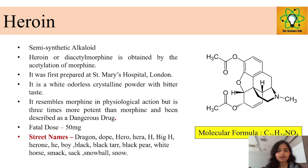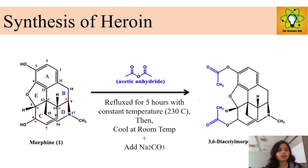Here are some street names of heroin: Dragon, Dope, Hero, Big H, Boy, Black Tar, Black Bear, White Horse, Smack, Snowball, and Snow.